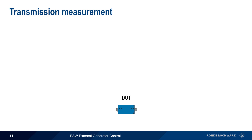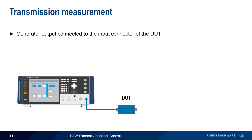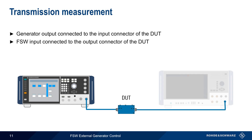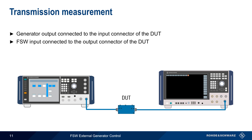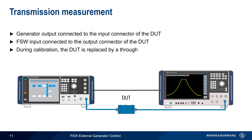Next we'll look at an example of a transmission measurement using a bandpass filter as a DUT. The generator output is connected to the input connector of the DUT, and the output of the DUT is connected to the RF input of the FSW. Once the connection is established, the FSW will display power versus frequency for the filter. Note that when this test setup is calibrated, the DUT is replaced by a through connector.